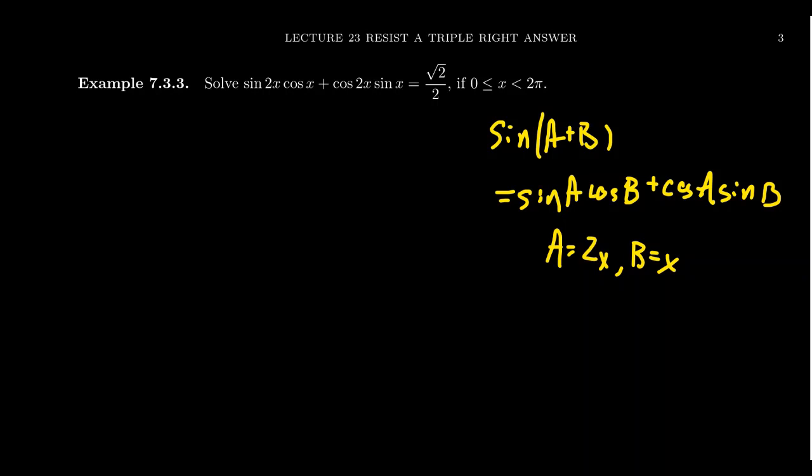So the left hand side would simplify just to be sine of 2x plus x, and then the right hand side is root 2 over 2. Holy cow, that was so much easier if you use the right identity. The left hand side then simplifies to be sine of 3x, and this is equal to root 2 over 2.